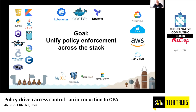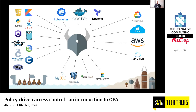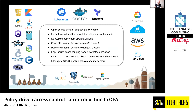The goal of OPA is to unify policy enforcement across this cloud native stack. What we're really trying to do here is to have one way of speaking policy regardless of whether you're working with Postgres, AWS resources, or in Go. OPA is an open source general purpose policy engine. It offers a unified tool and framework for working with policy across the stack. OPA decouples policy from application logic — it extracts the policy part and moves it out, kind of like you'd move data from your app into a database.